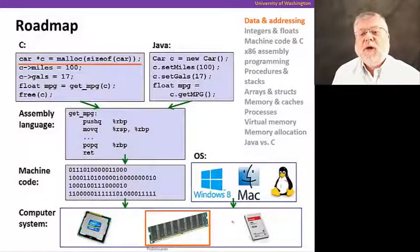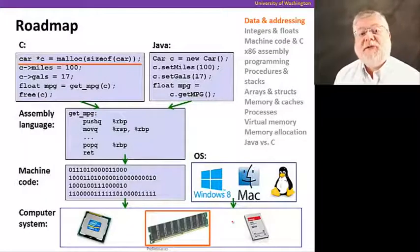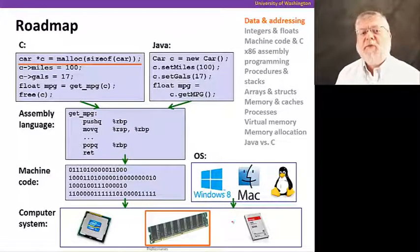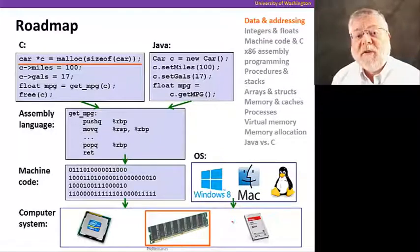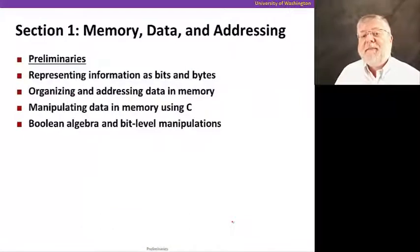Let's take a look at our roadmap. We're at our first section that will address the issues of data and addressing, namely how do we store information in memory, how do we represent it in terms of zeros and ones, and how do we reference that data? In other words, what addresses do we provide so we can find the data we've put in memory again? Before we get into that and the other topics in this section, we're going to start with a few preliminaries about how we organize our hardware.